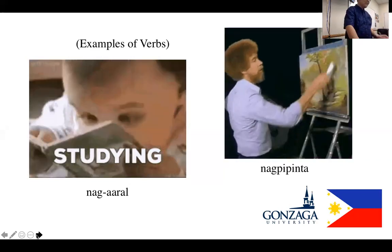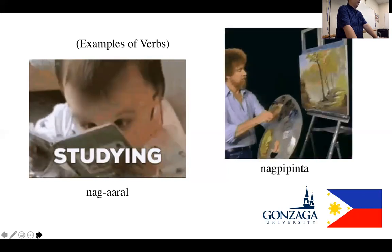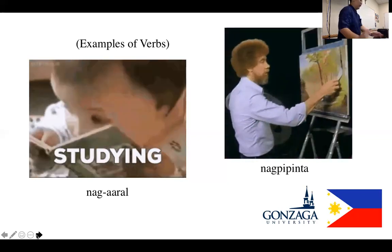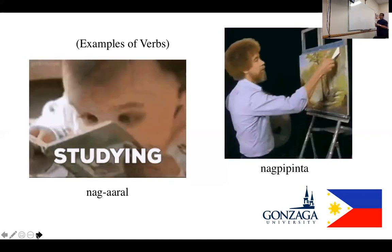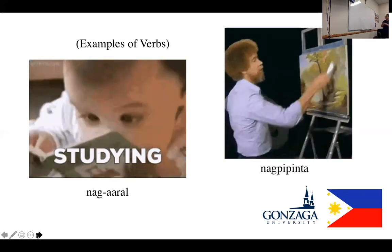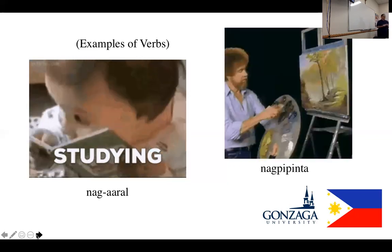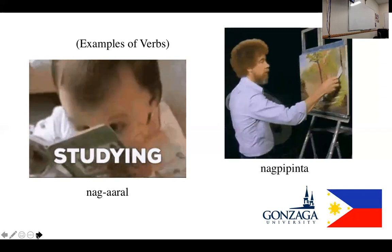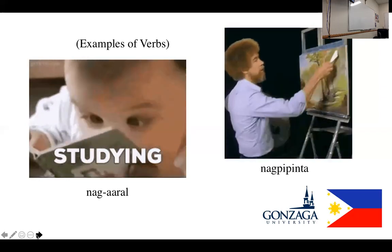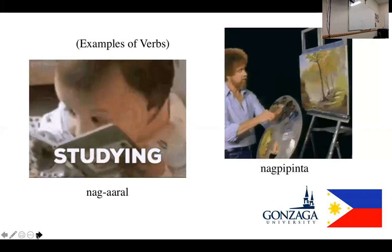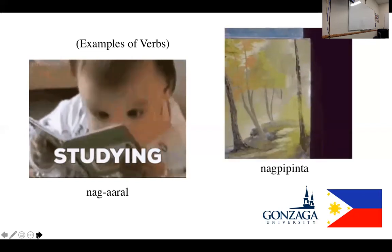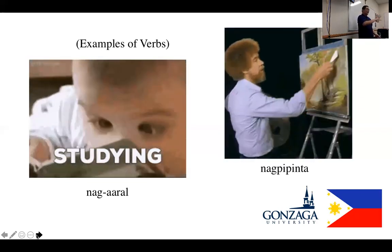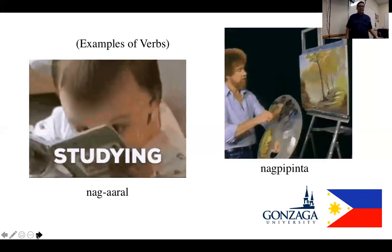Let's have the first example: 'Nag-aaral' — that translates to 'studying.' And then 'nagpipinta.' As mentioned, not all roots in the verb are originally verbs — they can also be nouns. The word 'aral' in Filipino means 'lesson,' so it's a noun. But if you compare it with nagpipinta, the root is 'pinta,' which means 'paint' — it's a verb. So the root is not always a verb originally; a noun can be affixed and become a verb. That's the morphology of the Filipino language.